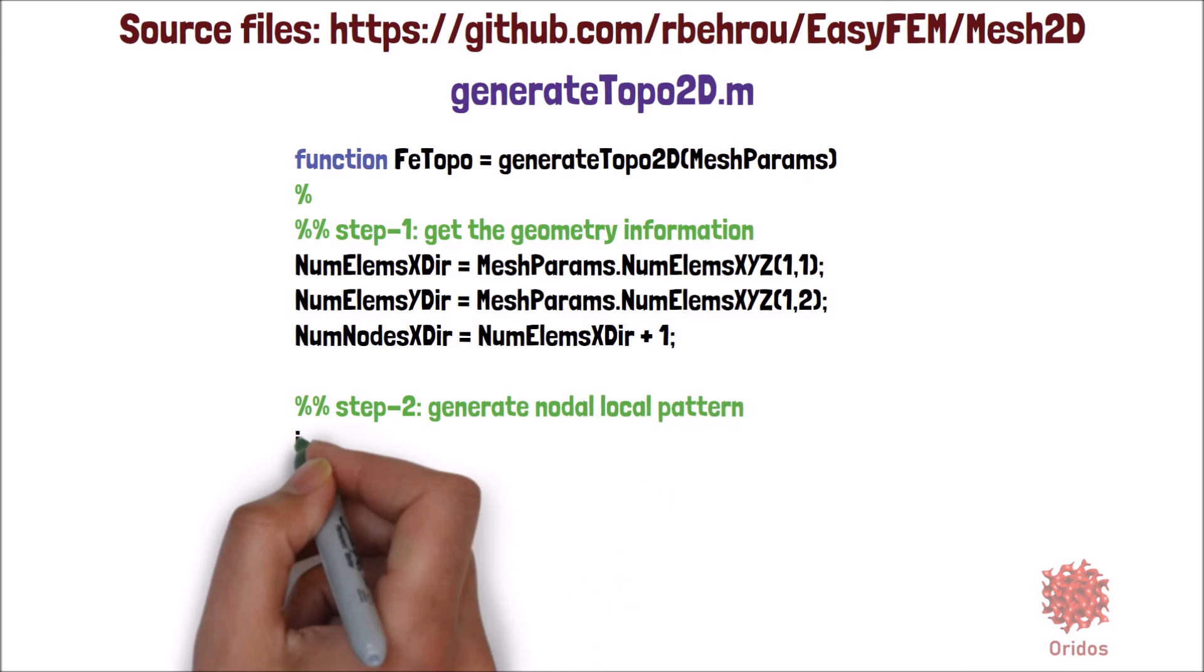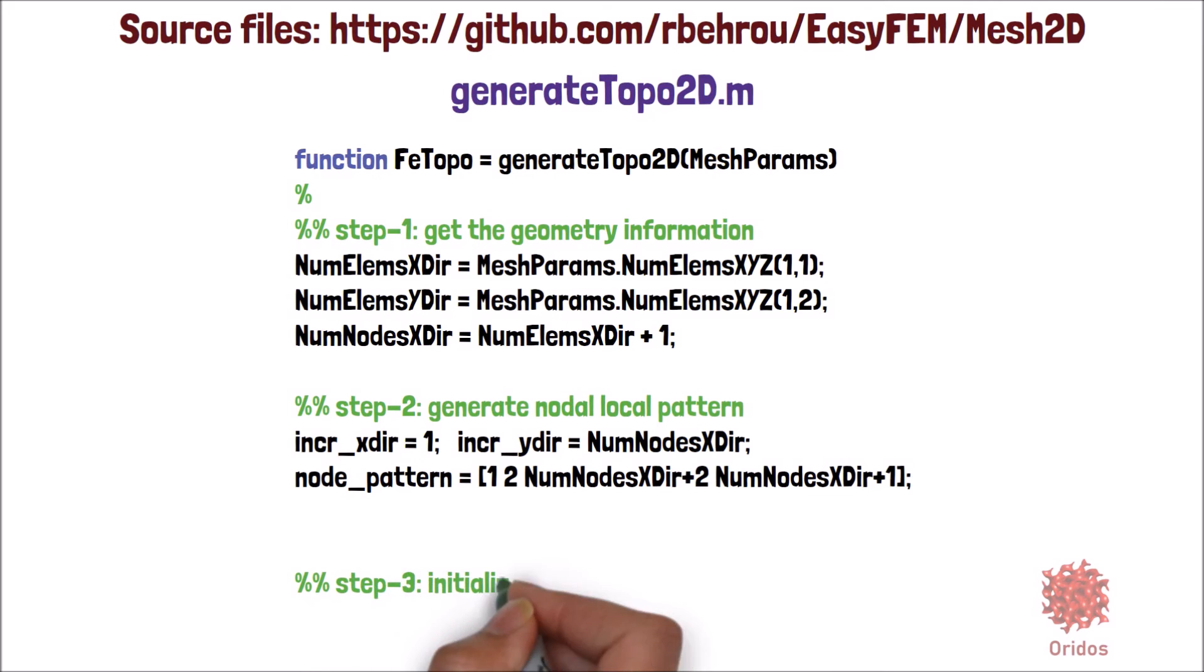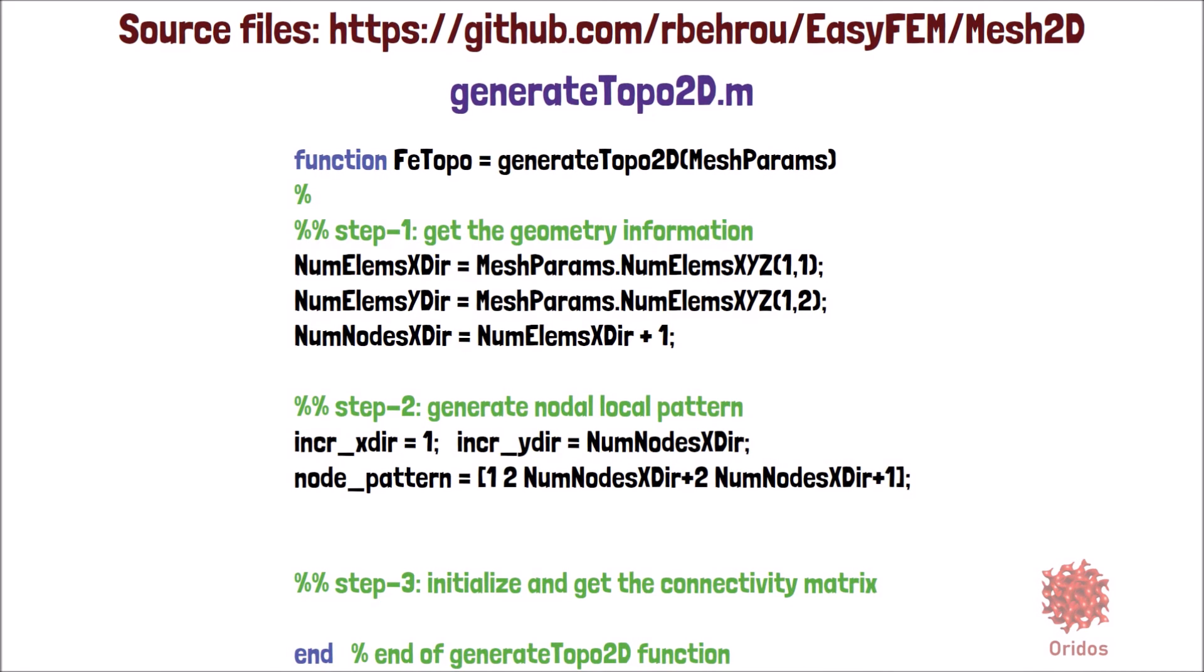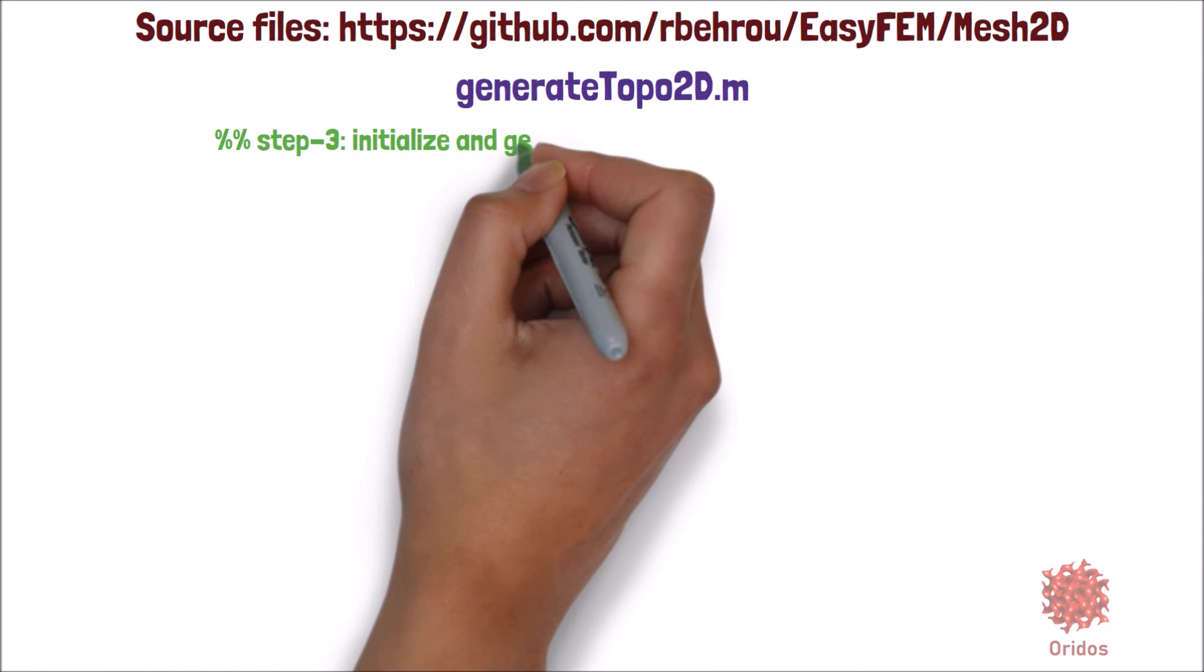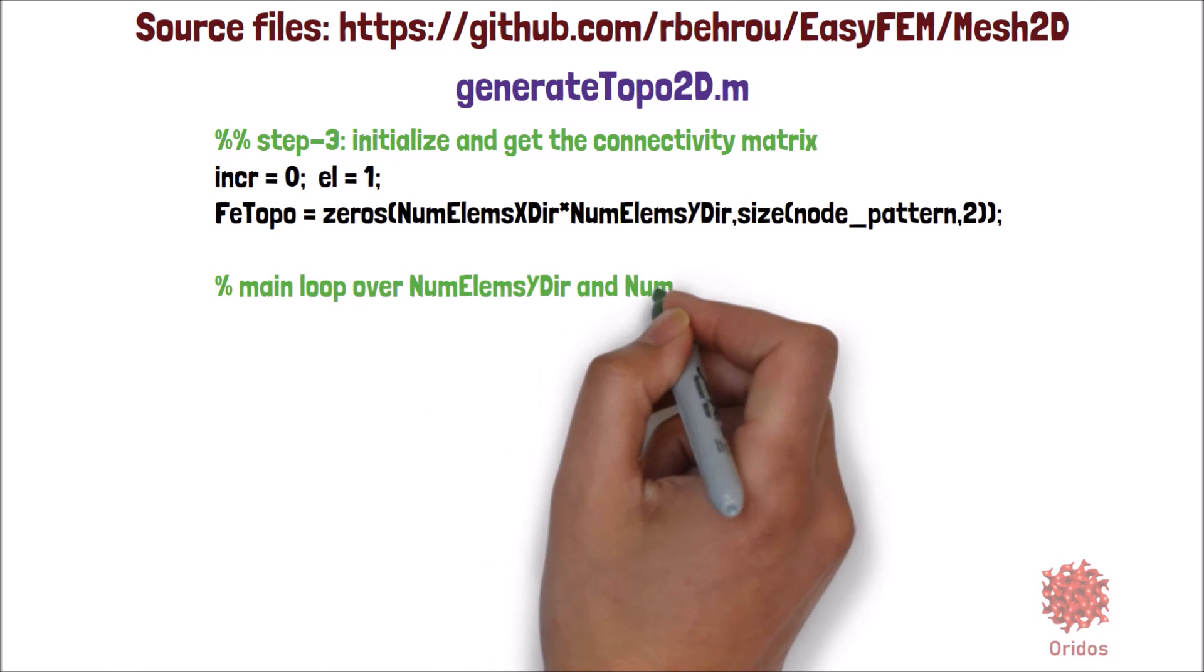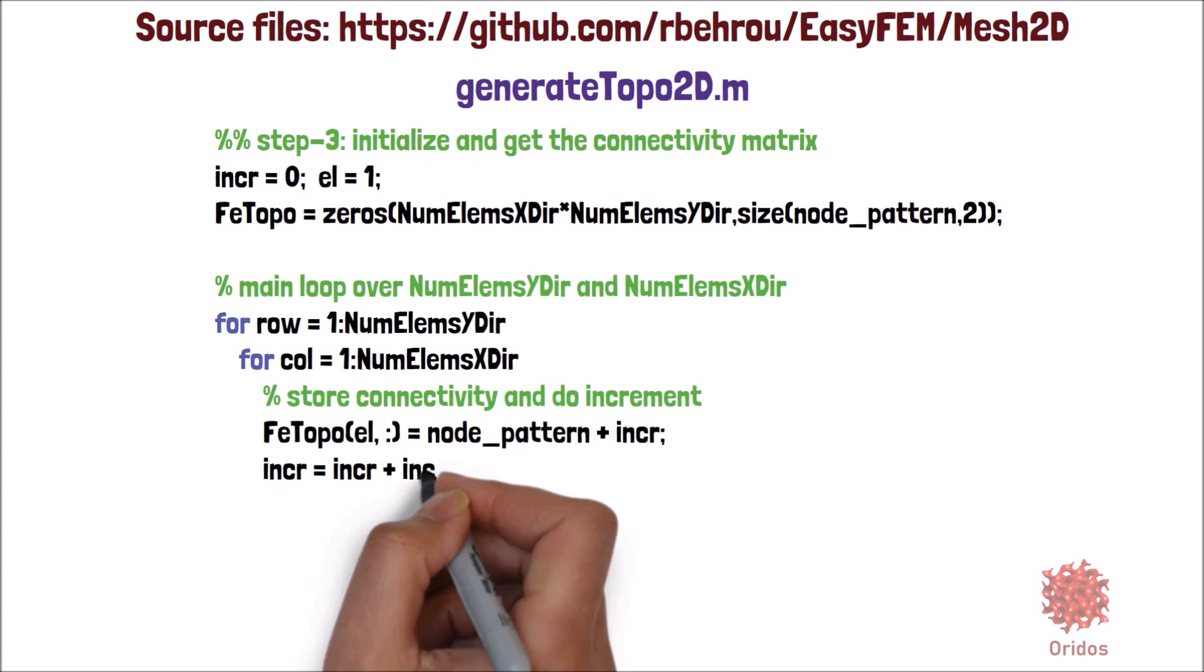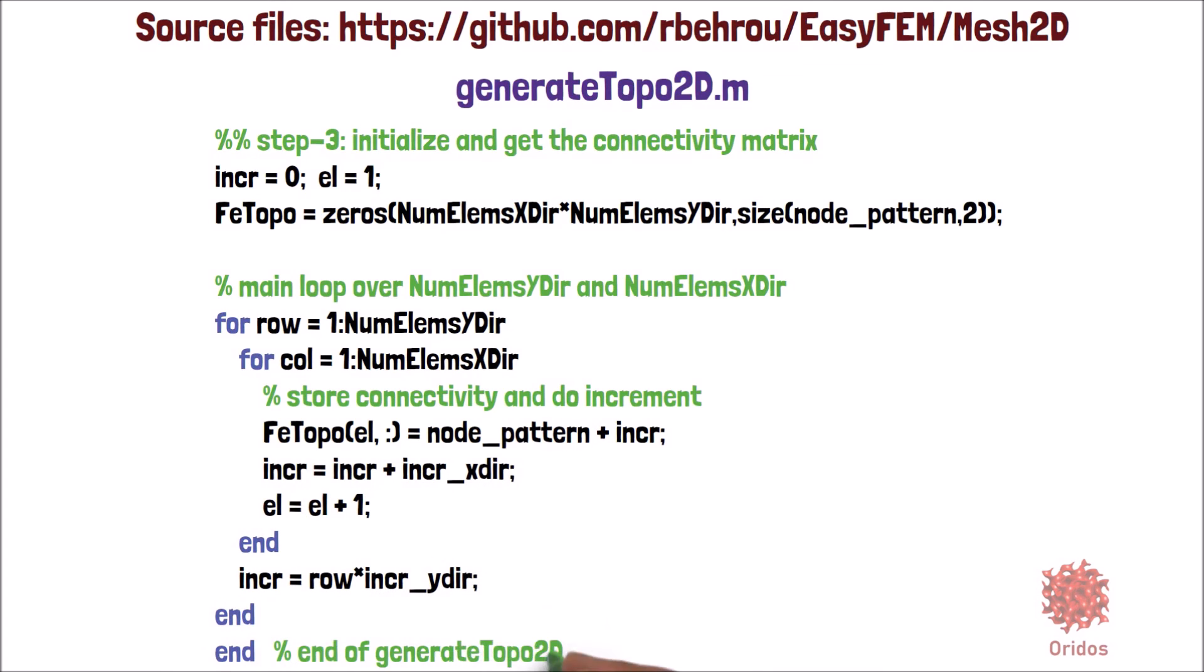Step two is to generate the nodal local counterclockwise pattern, as we discussed before. And finally, step three is to loop over the number of elements in the X and Y directions, and get the connectivity for each element, store it in the FeTopo matrix, and update the increments, as you can see in the code.